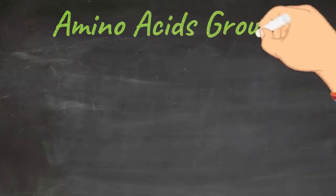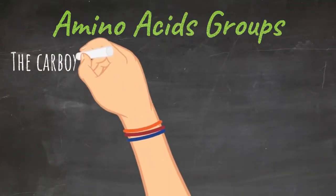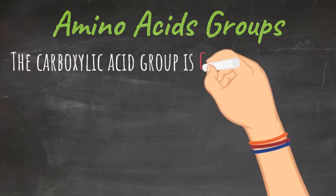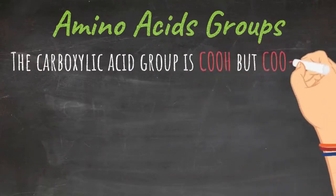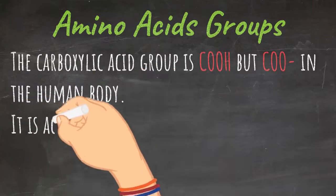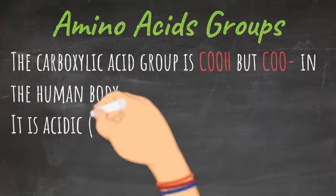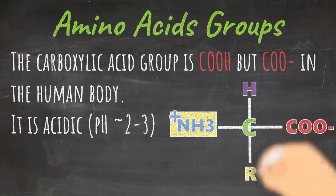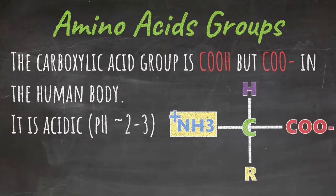The carboxylic acid group is represented by COOH. It is very acidic, with a pH between two and three. Within the human body, the carboxylic acid is deprotonated, meaning it gains a negative charge and loses its hydrogen atom, because it is so acidic that it is usually deprotonated until you reach a pH well below two or three.